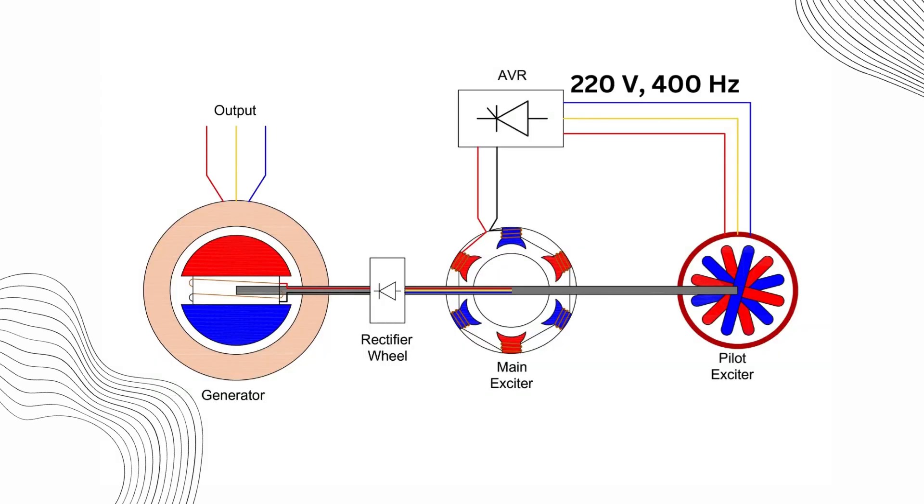After rectification, the DC voltage is sent to the main exciter. Now the main exciter functions in a reverse manner compared to the pilot exciter. Its stator houses the DC field winding, while the rotor contains the AC armature winding, producing an output frequency of 150 Hz. This generated AC voltage is then sent to the diode rectifier wheel, which converts it to DC voltage to be fed into the generator's rotor winding.